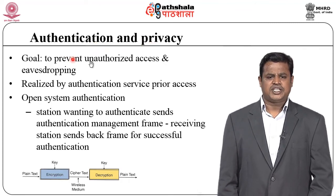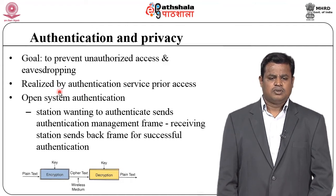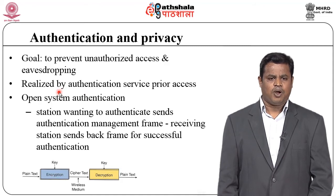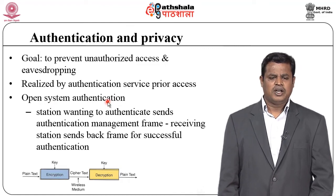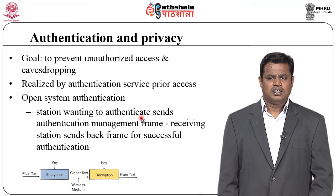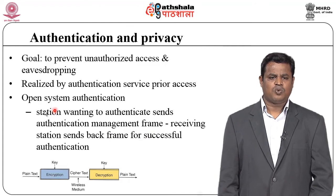The main aims are to prevent unauthorized access and eavesdropping. The wireless medium sends plain text; encryption and decryption work the same way as discussed — whether symmetric or asymmetric keys. But before a device connects to an access point, we need to authenticate the device. In open system authentication, there are two steps before sending data to the access point: association and authentication. The station wanting to authenticate sends an authentication management frame, and the receiving station sends back the frame for successful authentication.